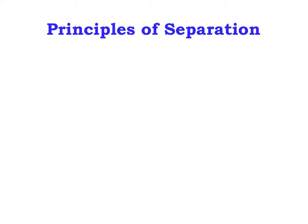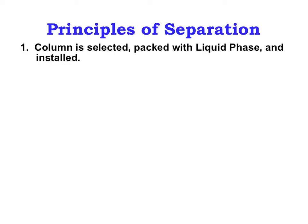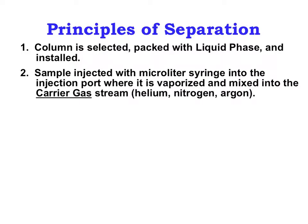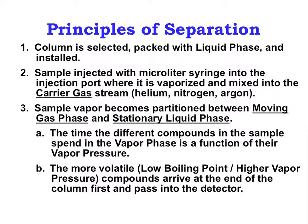Here is a summary of the principles of separation. If you need to look at it in more detail, you can go back and review the pertinent sections. The column type is integral to separation, and you need to make sure you choose a column appropriate to your sample. In fact, there are companies that will custom design columns for particular applications. You also need to pay attention to your injection technique to ensure optimal peak differentiation. Remember that the separation is due to effective partitioning between phases.